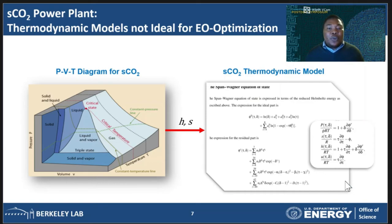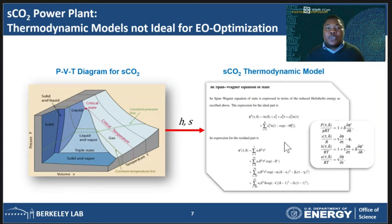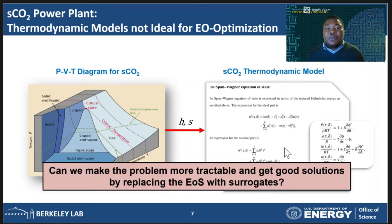On top of the complexity of the equation itself, to get the properties we desire — which are the enthalpy and entropy — we actually need to take some derivatives of the equations. So the question we need to ask ourselves is: can we make this problem more tractable and get good solutions by replacing this equation of state with surrogates for the thermodynamic properties that we actually need?